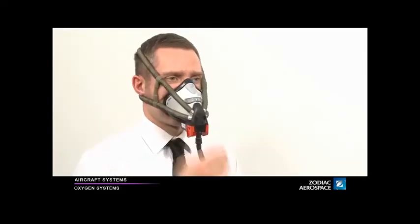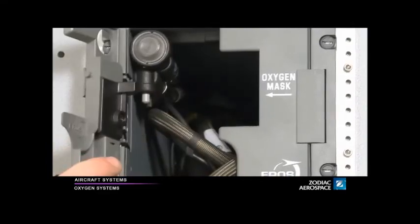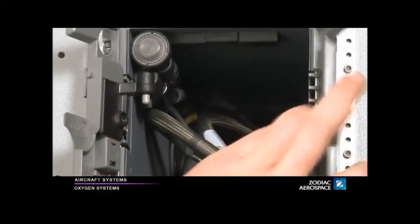Remove the mask by pressing and holding the red tabs. Open the stowage box doors. Fold the harness over the mask shell cavity as shown.